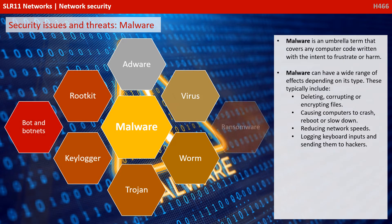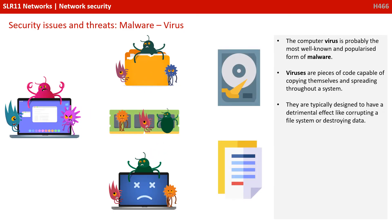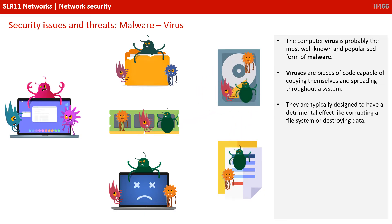Now let's look at malware. Malware is an umbrella term that covers any computer code written with the intent to frustrate or harm. Malware can have a wide range of effects depending on its type. These typically include deleting, corrupting, or encrypting files, causing computers to crash, reboot, or slow down, reducing network speeds, or logging keyboard inputs and sending them to hackers. One of the most common types is the computer virus — probably the most well-known form of malware. Viruses are pieces of code capable of copying themselves and spreading throughout a system, typically designed to have a detrimental effect, like corrupting a file system or destroying data.